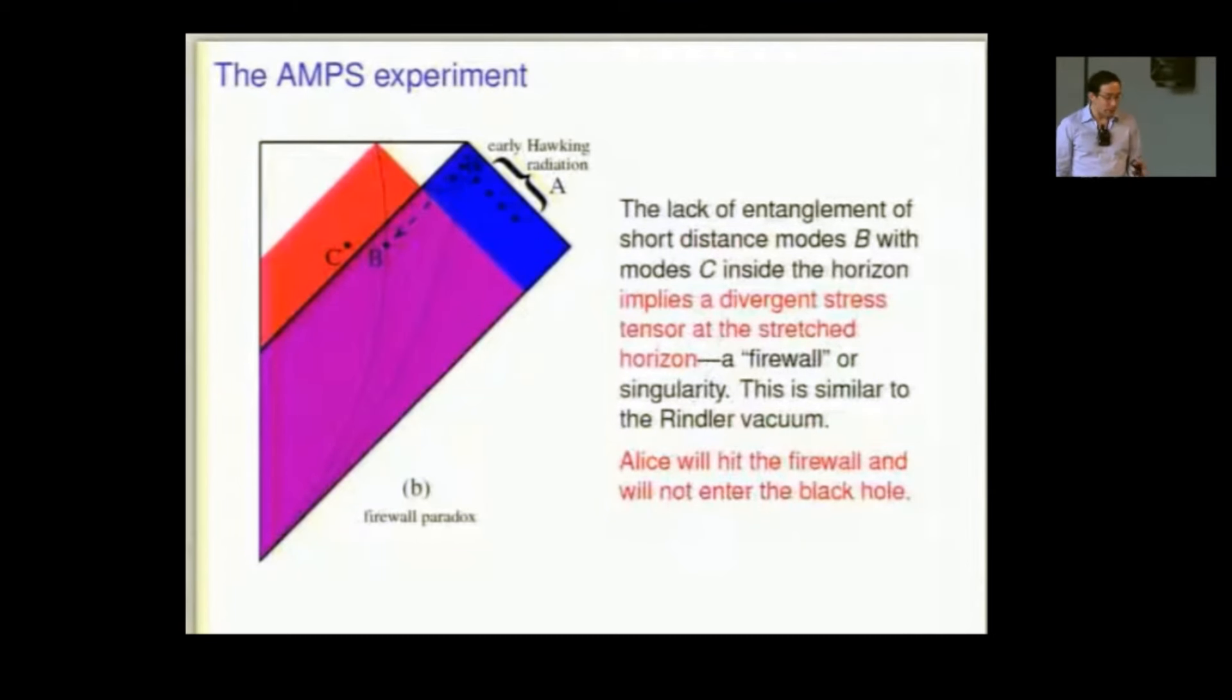But it's an extremely, even if it was the most conservative choice, it's an extremely radical conclusion. The lack of entanglement of short distance modes across the horizon implies a divergent stress tensor at the stretched horizon. Think of the Rindler vacuum. This is similar to being in the Rindler vacuum. When you compute the stress tensor, there's a sort of delta function singularity at the horizon. This is true for any pure Rindler status, as when Rammstrunk recently showed and his collaborators.